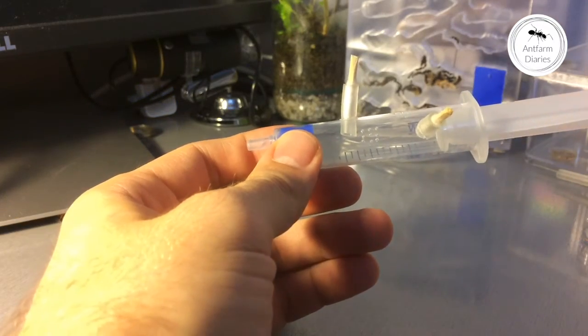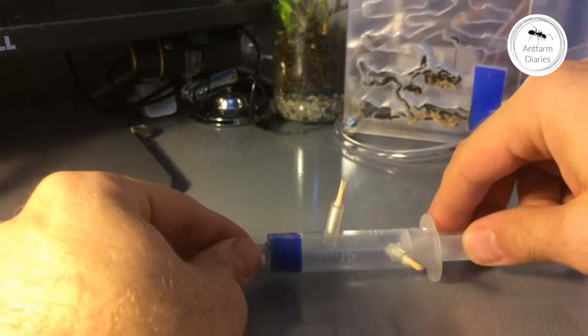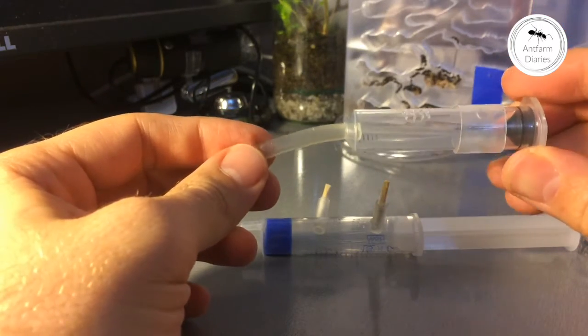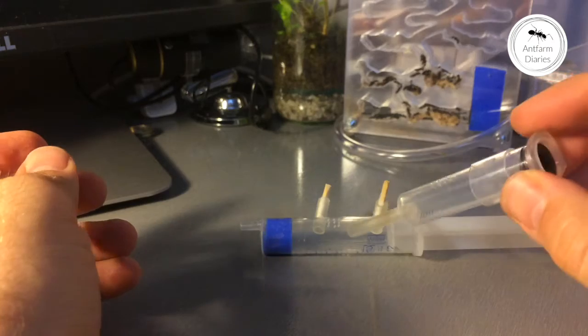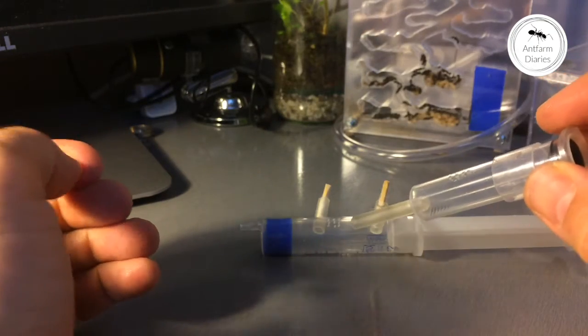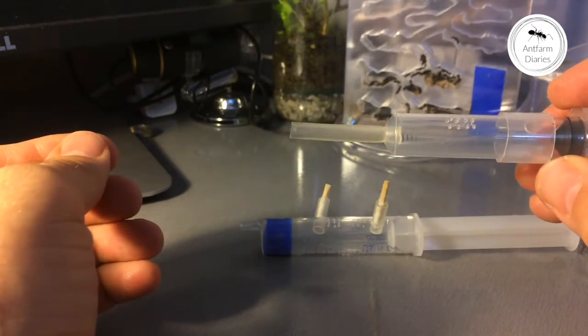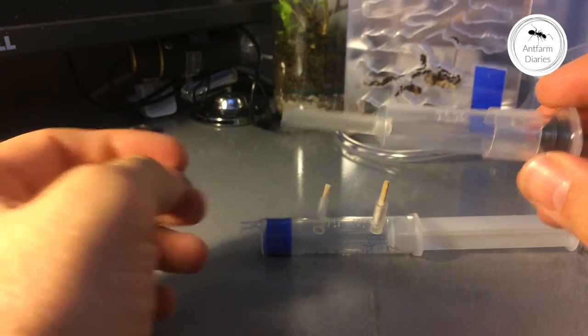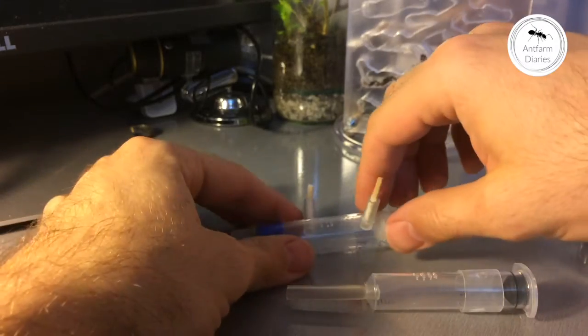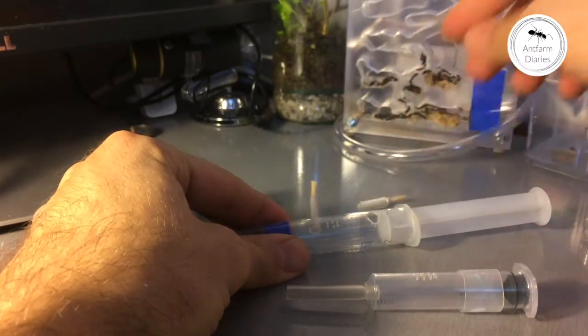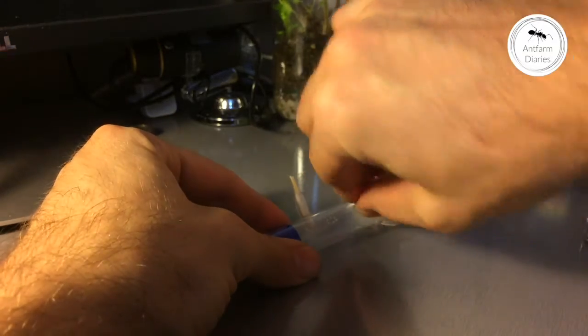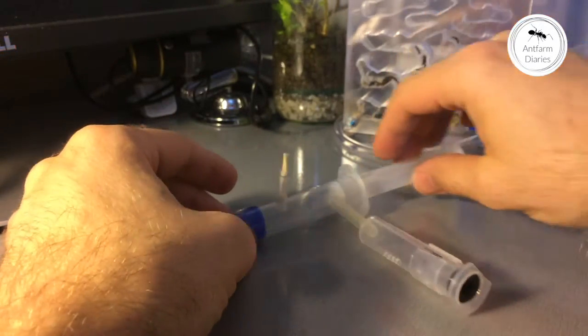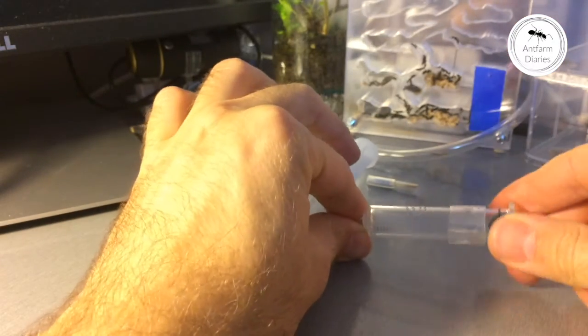And here is the second part of this incubator I wanted to show you. This is kind of a mini arena that I'm going to attach to this incubator later when we have about 10 to 15 workers in this colony. So I will just take off this tubing and assemble this mini arena like so. And as you can see it's perfectly stable.